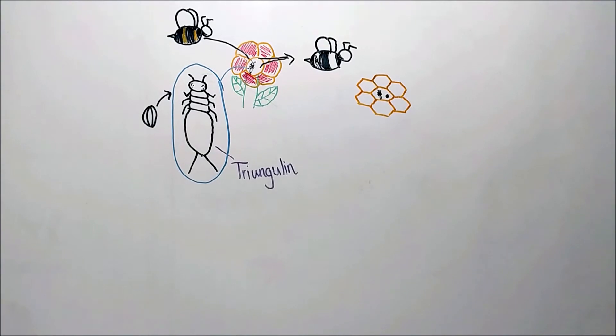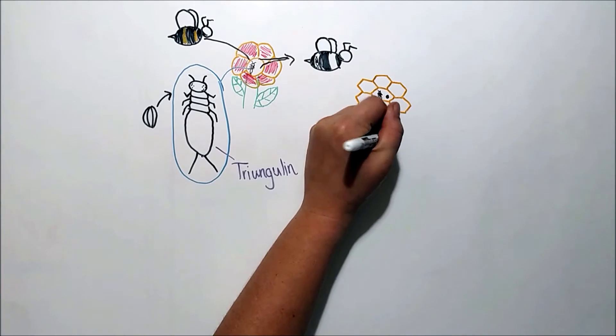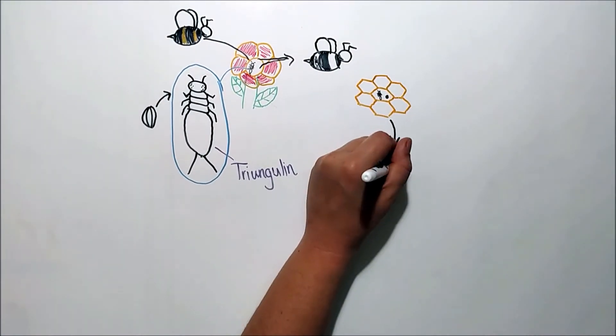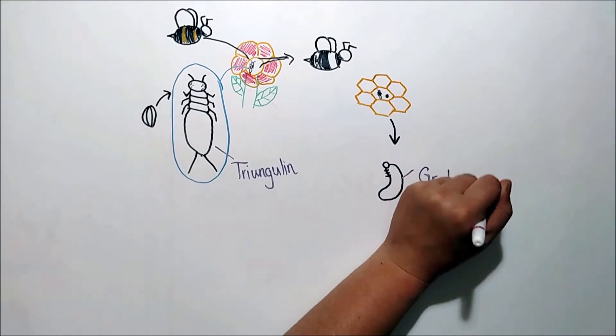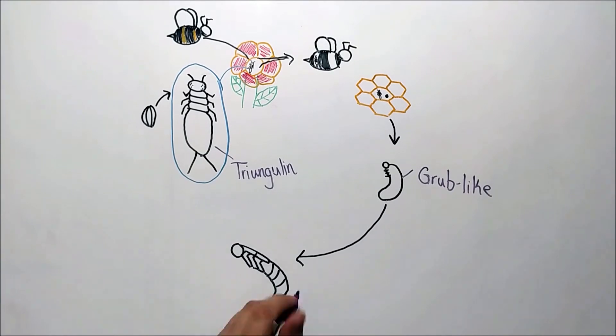The beetle larvae will stay in the comb for the rest of its immature life and therefore no longer need the long legs and fully developed antennae of the Triungulin. It molts into a grub-like larvae and feeds until it is fully developed. It pupates in a cell and will emerge as a fully developed adult.